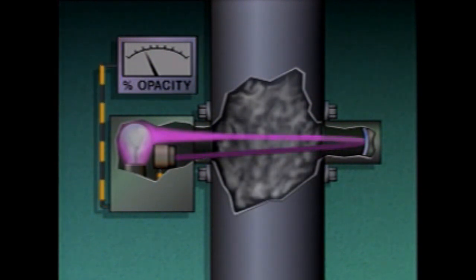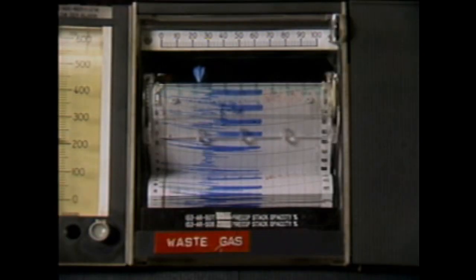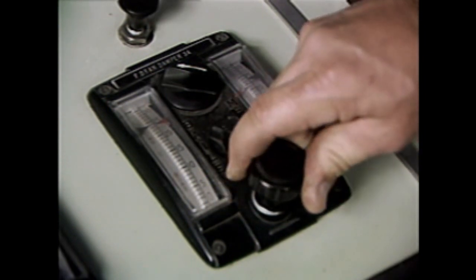The more suspended particles there are in the gas, the higher the percentage of opacity. In some plants, opacity measurements are used to monitor particulates in gas being discharged to the environment. Operators often use those indications to make necessary operating changes. In this topic, we talked about what clarity is and looked at how three types of clarity analyzers work.